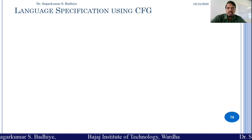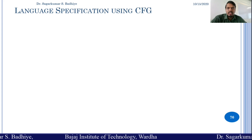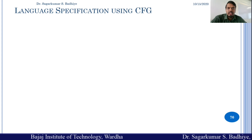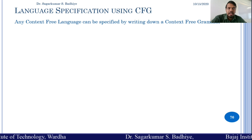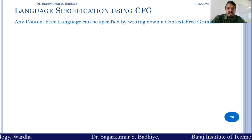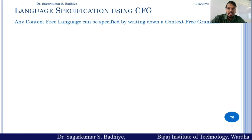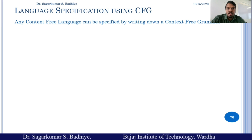Welcome back to the next class of Theory of Computation. In this class we are going to learn about language specification using context-free grammar. Any context-free language can be specified by writing down a context-free grammar. This means that if a context-free grammar is given to us, then we can generate the language represented by that particular context-free grammar.